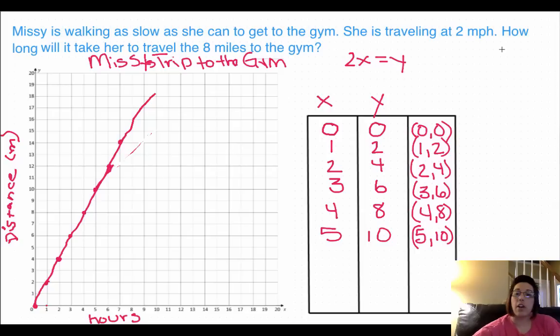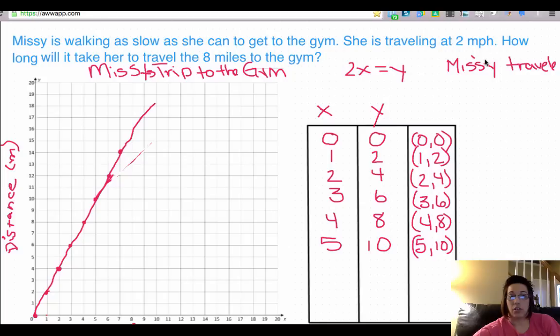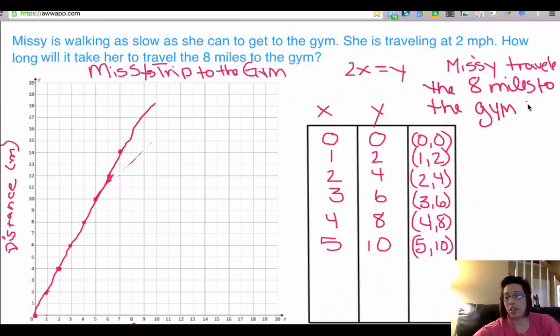Okay, so let's look at our answer to this. Missy traveled eight miles to the gym in four hours. There we go.